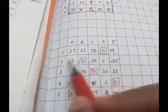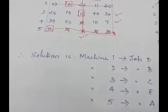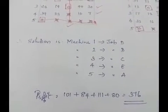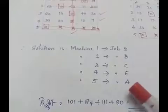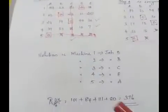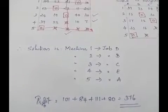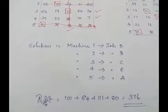The assignments are: 1 is assigned to D, 2 is assigned to B, 3 is assigned to C, 4 is assigned to E, and 5 is assigned to A. For profit calculation using the original question table: Machine 1 assigned to Job D has value 101. The last assignment, 5 to A, corresponds to the dummy row, so it is not counted. The total profit is 376.